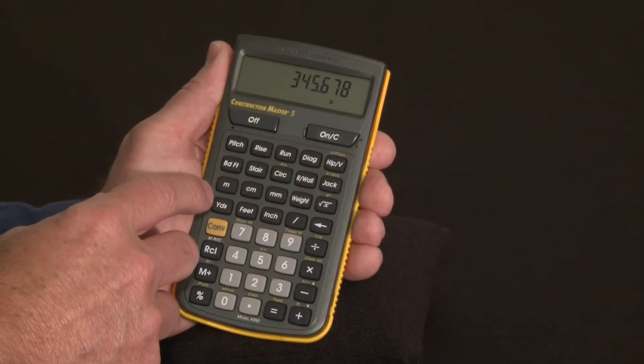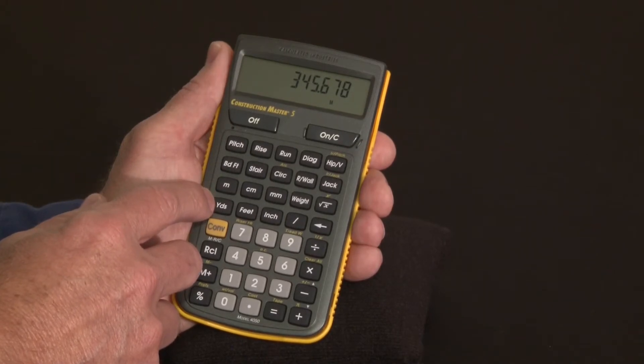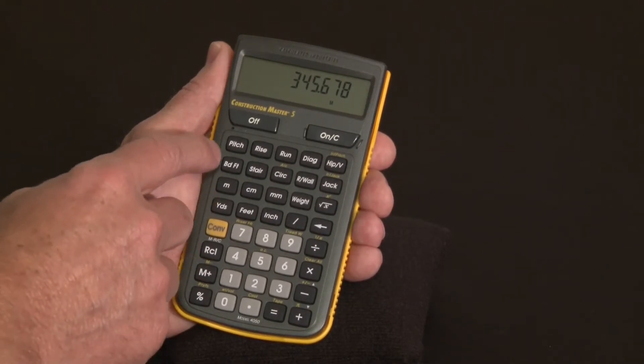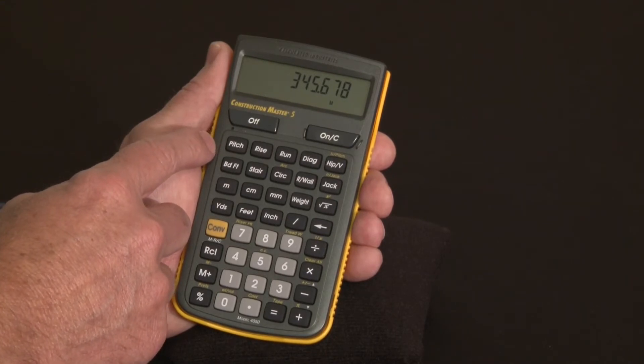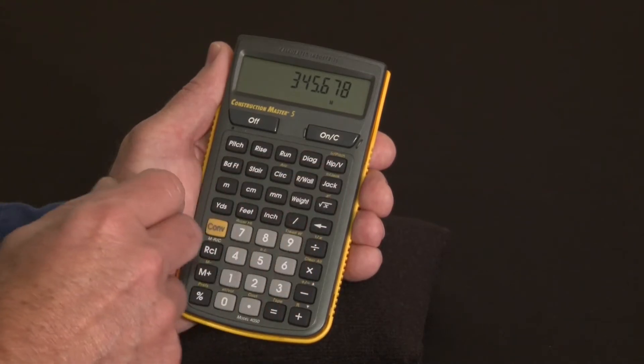The dimensional math keys here allow you to do metric and imperial and mixed unit calculations and conversions. The top row of functions here are your right angle solution keys for slopes, square ups, diagonals, rafters, hip and valley rafters, even jack rafters.